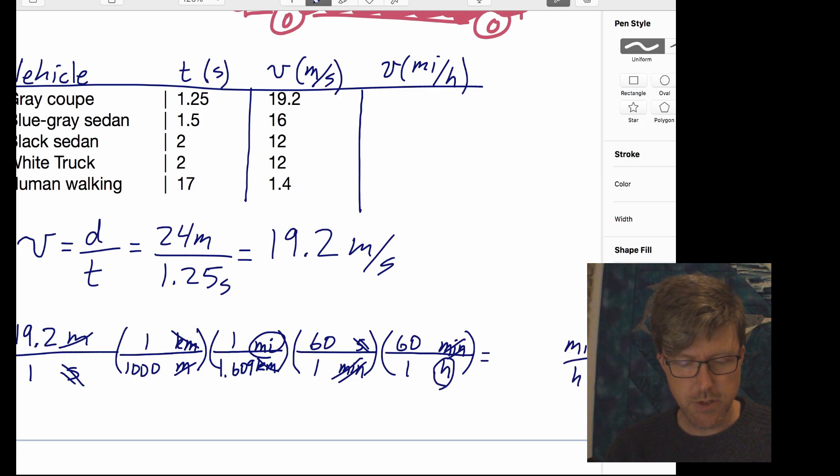I'm going to start with 19.2. We're going to divide by a thousand because that's in the denominator. We're going to divide by 1.609 because that's in the denominator. Then we're going to multiply by 60. Multiply by 60 again. Hit equals. And we have 42.958. So we're going to round that. We're going to round it to 43. So we have 43 miles per hour. When we're doing rough estimates, we round. We don't keep a lot of those decimal places. All right. So we have 43. I thought that gray coupe was going pretty fast. I estimate that it was going 43 miles per hour.